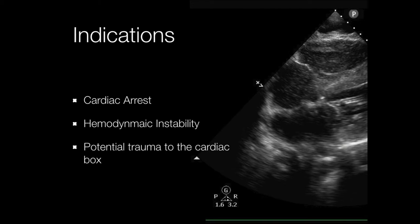The other indication — you've got to open up your perspective — is potential trauma to what we call the cardiac box: from the clavicles to the belly button, nipple to nipple. If there's any trauma in that box or trauma with potential to penetrate through it, it's a good idea to do cardiac ultrasound. Inside the box is the mediastinum — heart, pericardium, great vessels, and lungs — and injuries there have a high probability of causing the patient to go south quickly.